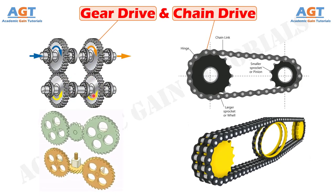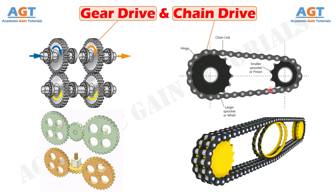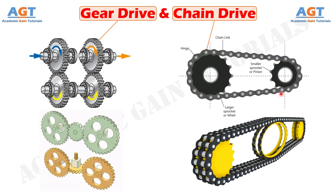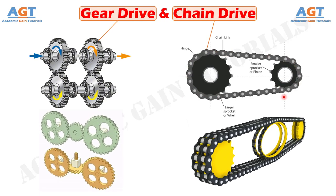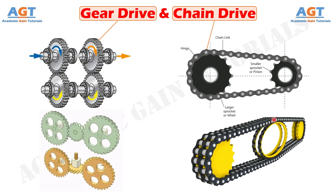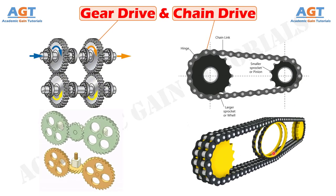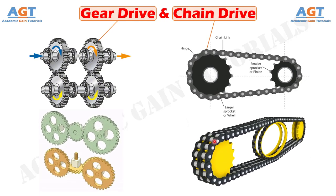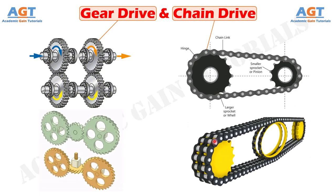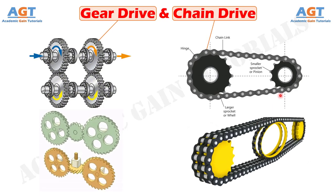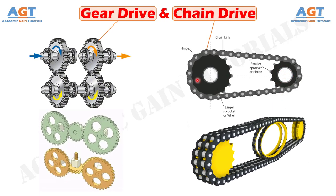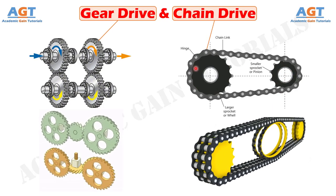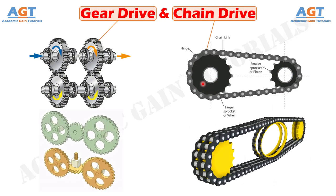Contrary to this, chain drive is suitable for comparatively long distance power transmission requirements. However, the load carrying capacity of chain drive is comparatively small. In chain drive, a sprocket is mounted on each of the driving and driven shafts, while an endless chain connects the sprockets.